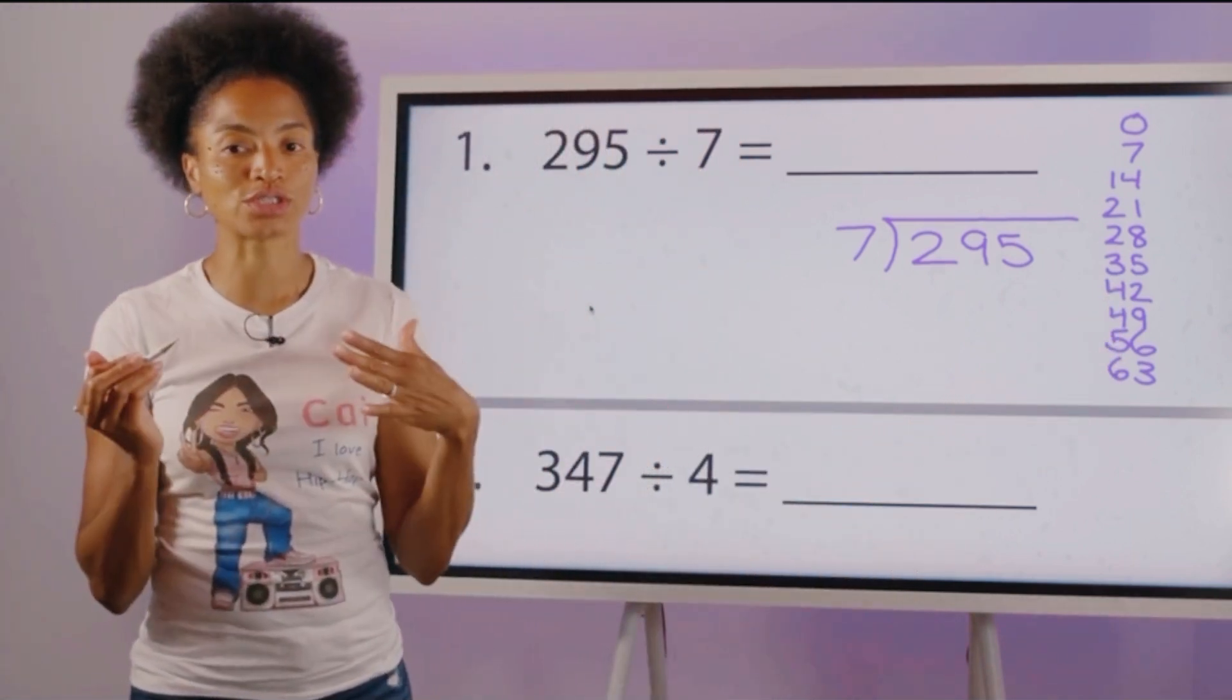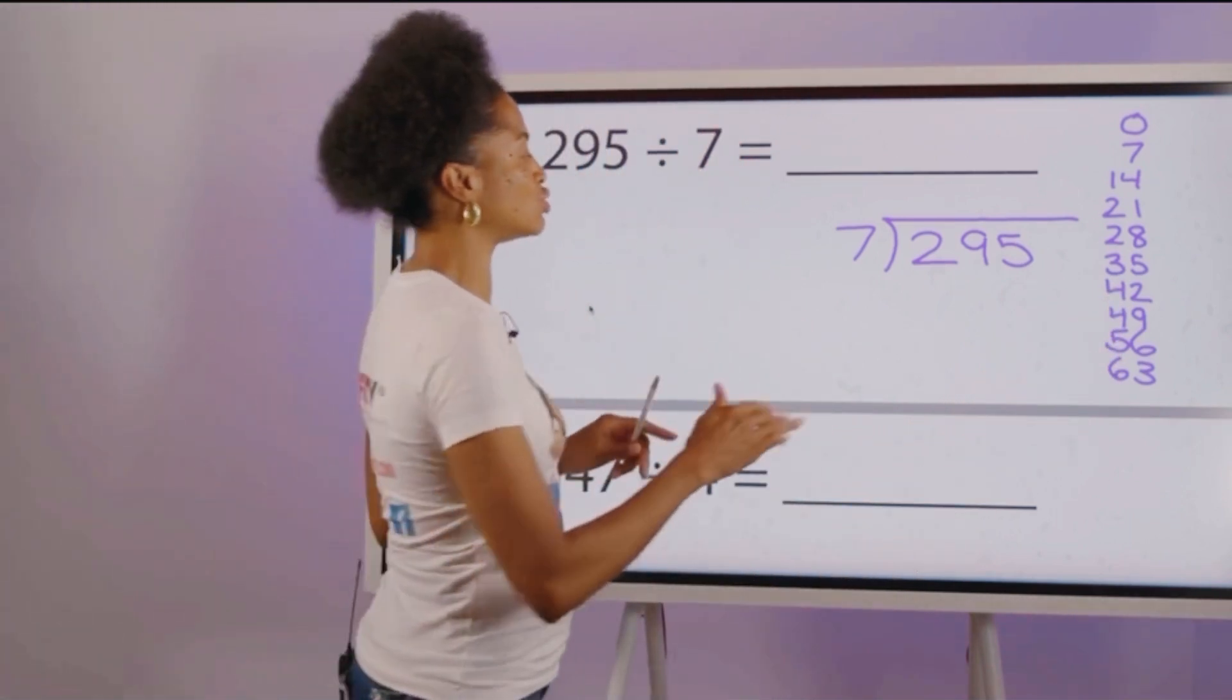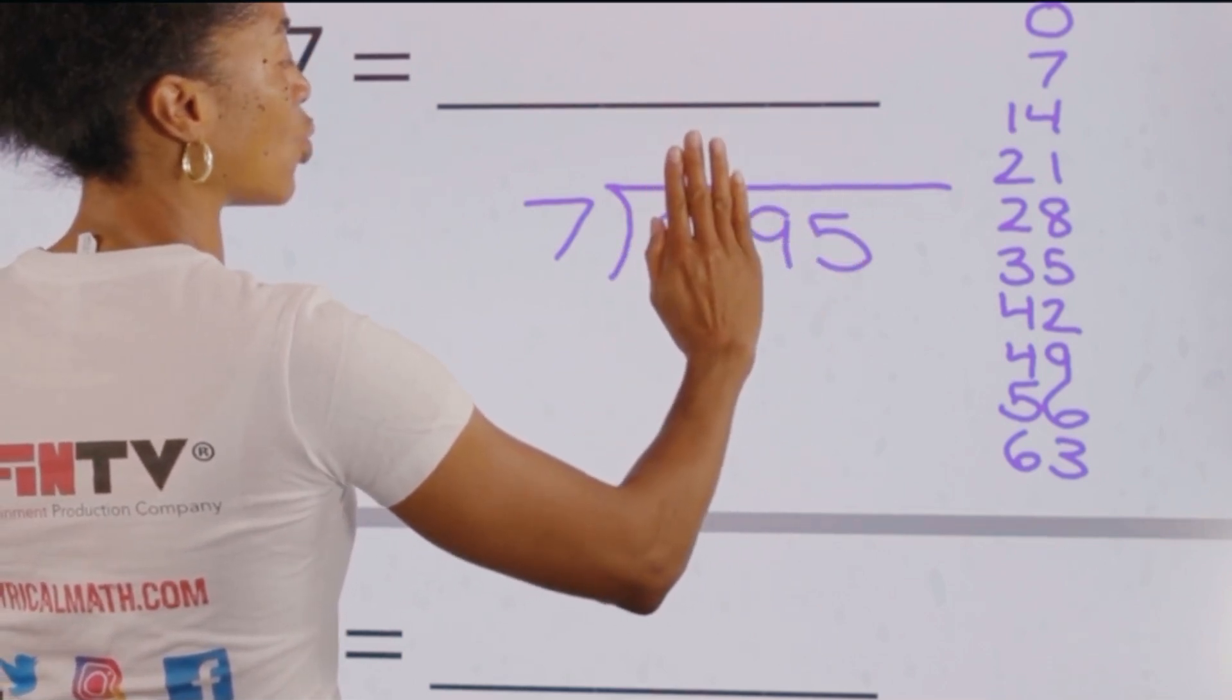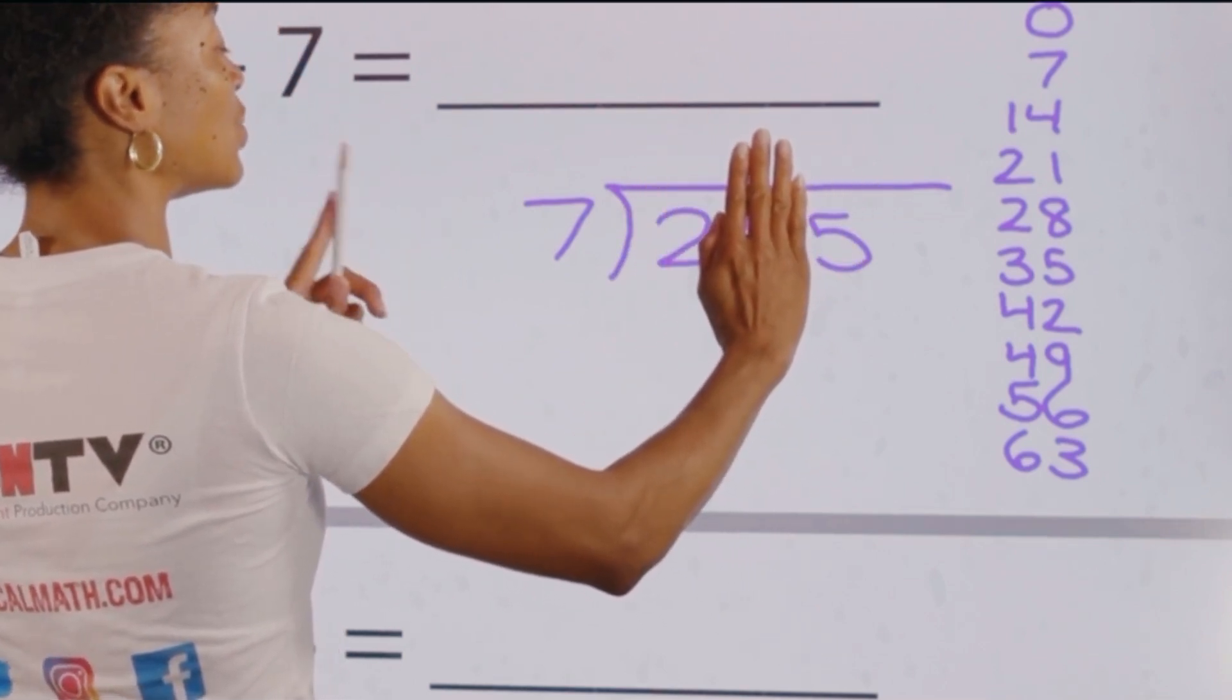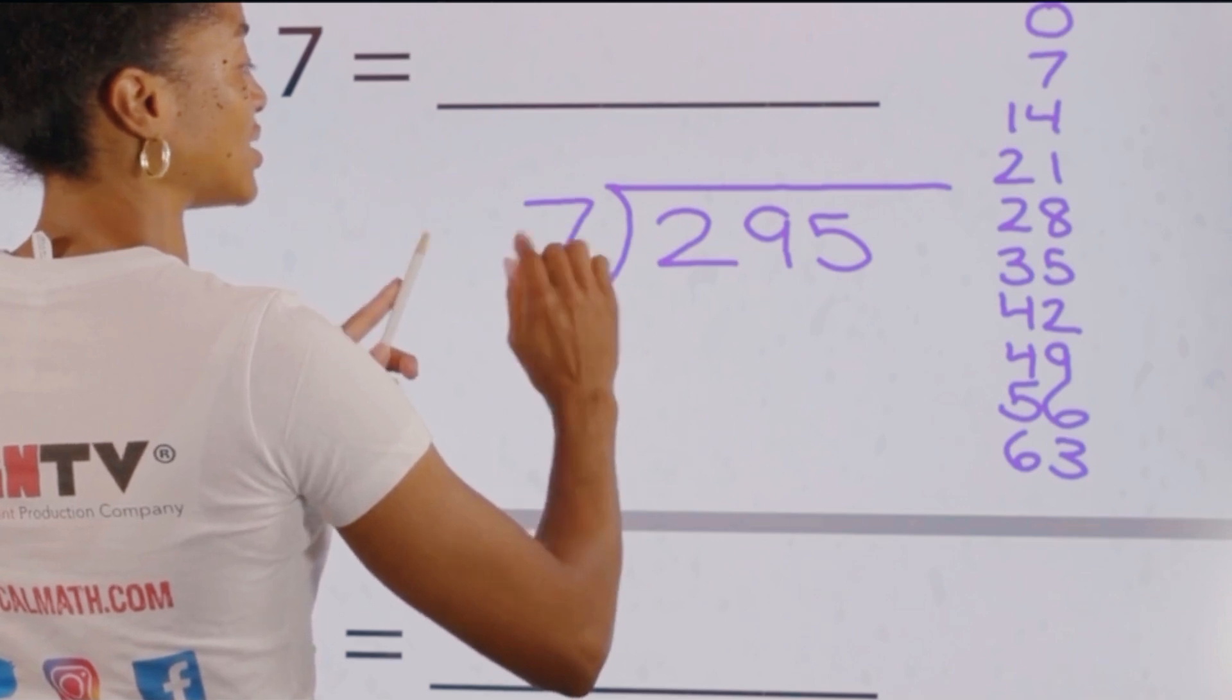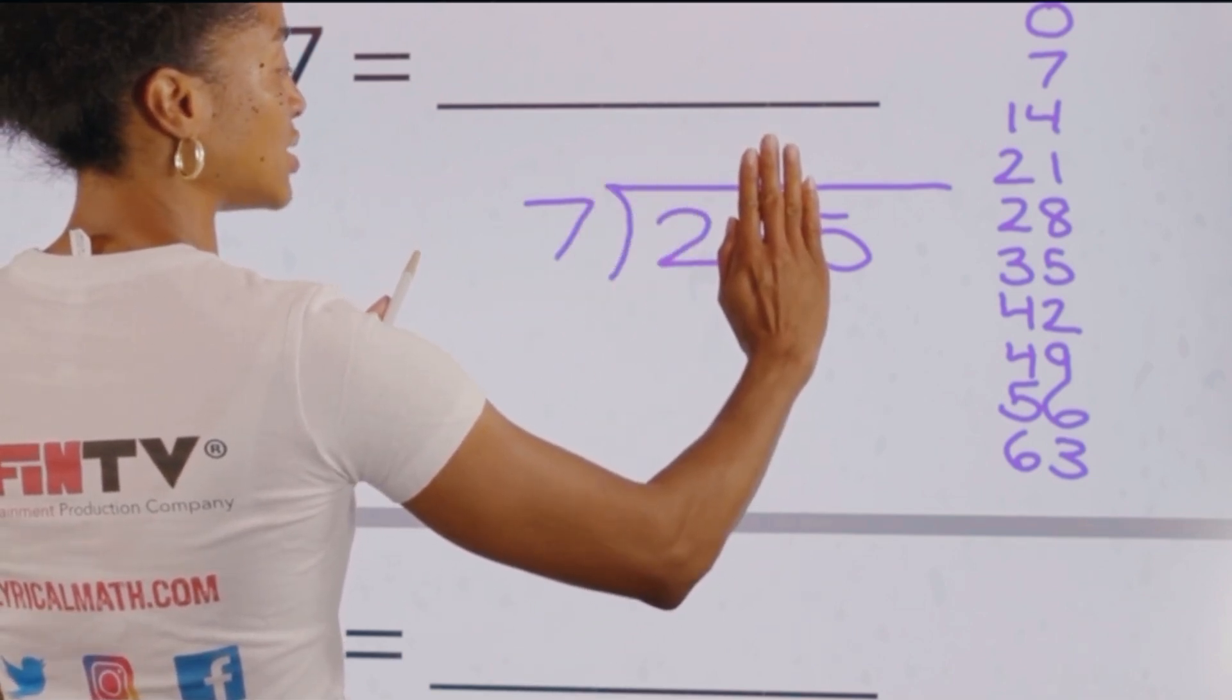Next we're going to cover up 295, slide over one digit at a time until we see a number that is larger than 7. So 2 is not larger than 7, but 29 is.